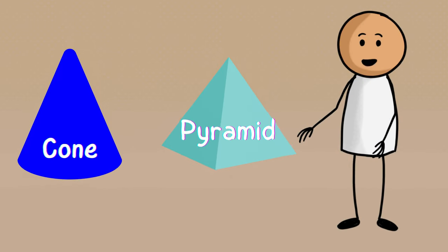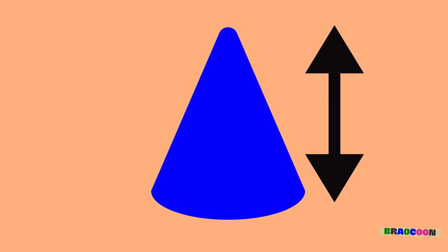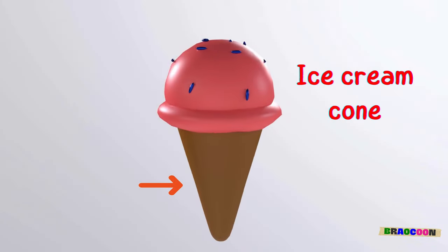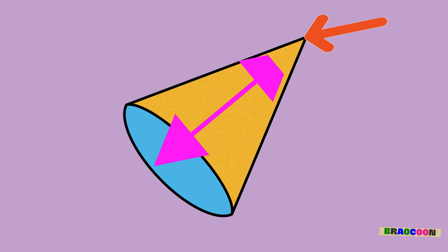Have you ever heard of cones and pyramids? A cone is a shape that starts wide at the bottom and tapers smoothly to a point at the top. Like an ice cream cone or a party hat, it has a circular base and comes to a single point.